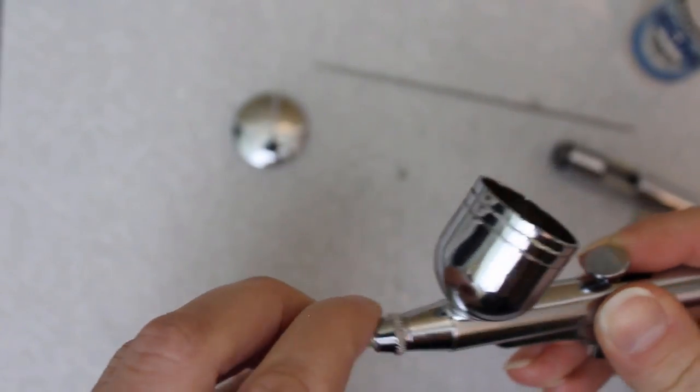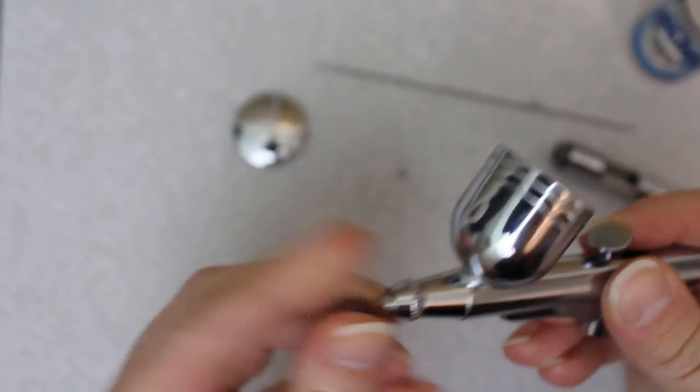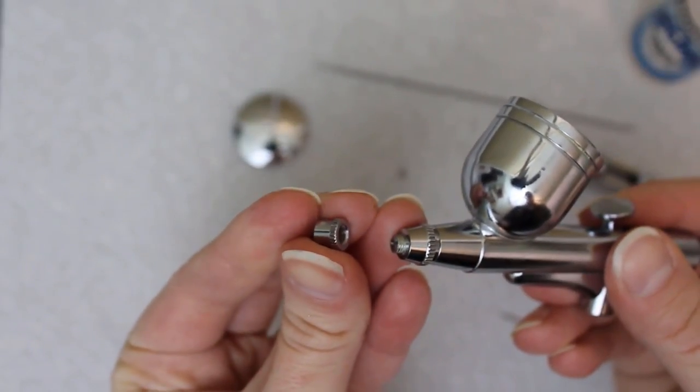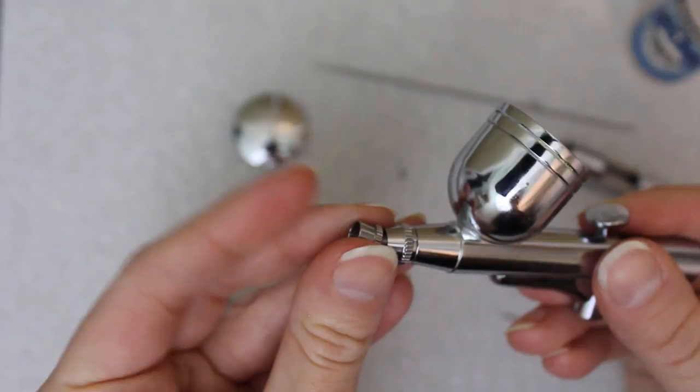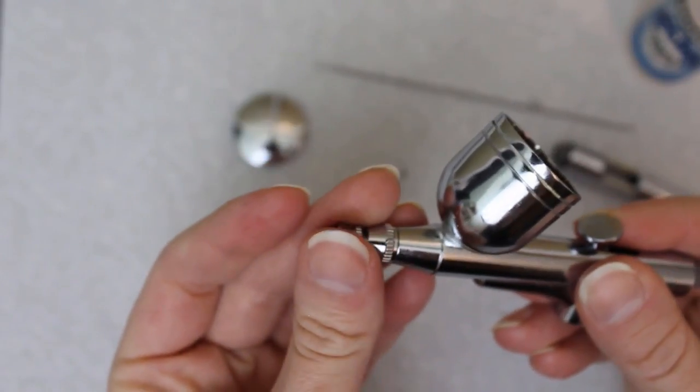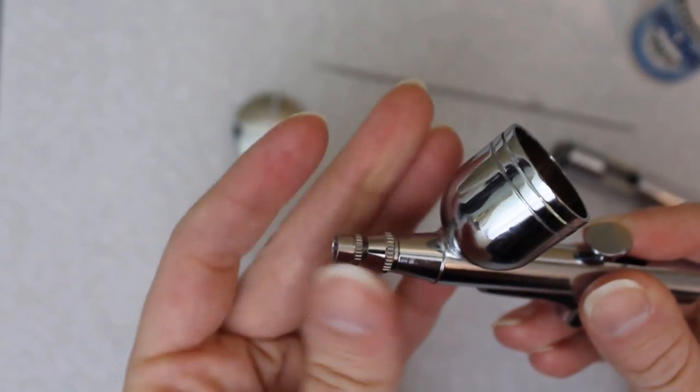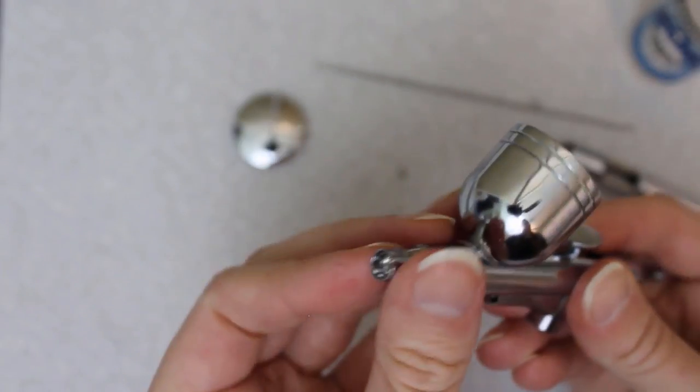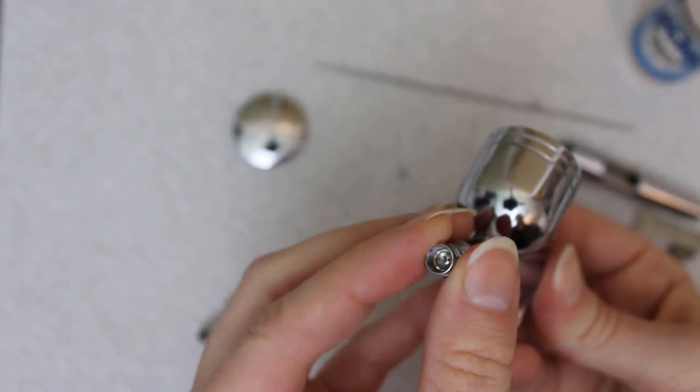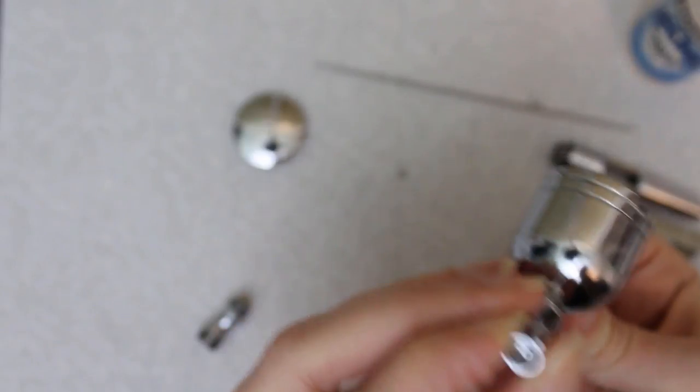Last is the needle cap. This protects the needle from damage and protects your fingers from the needle. Not all airbrushes let you remove this piece, but if you're working on really big projects, removing it can help reduce splattering because heavy paint flow can cause paint to build up inside this cap. When a droplet is big enough, it'll splatter out onto your project.